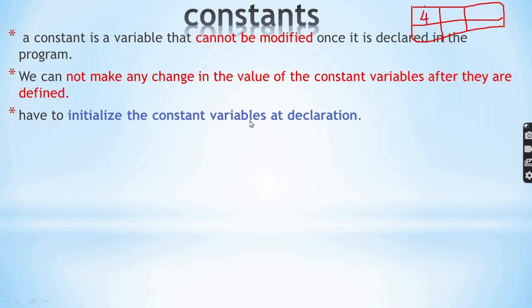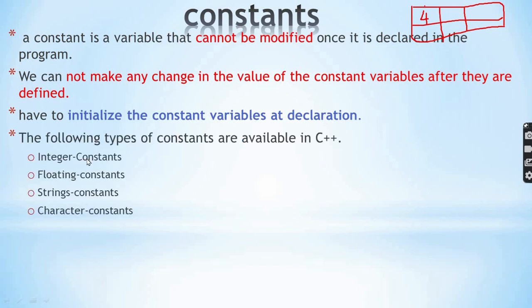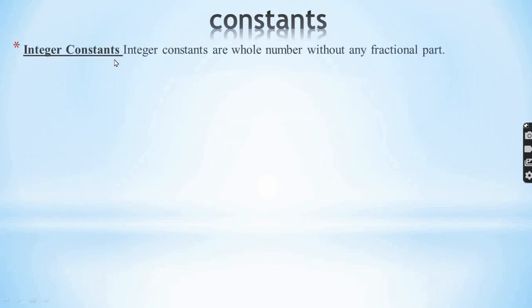How to initialize the constant variables at the time of declaration? The constant variable value is unchanged at declaration time. Types of constant variables include: integer constants, floating constants, and string or character constants.